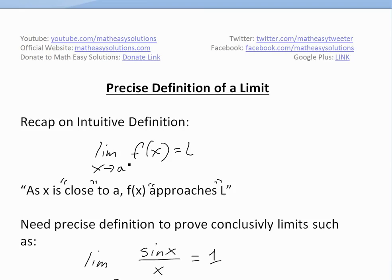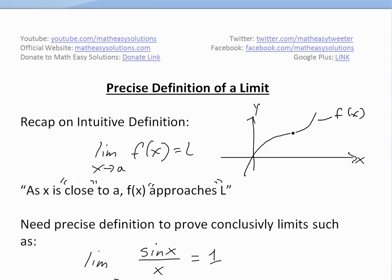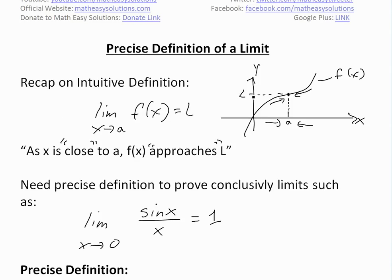The intuitive definition is this: if you have the limit as x approaches a of f of x equals L, you can just say that as x is close to a, f of x is approaching L. You can see this visually with a random function — as you're approaching a on the x-axis, the limit is just approaching this value L on the y-axis.